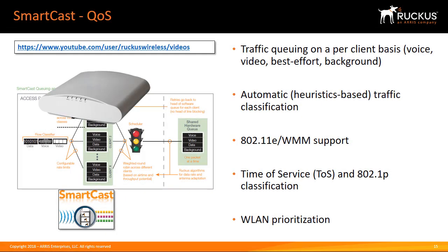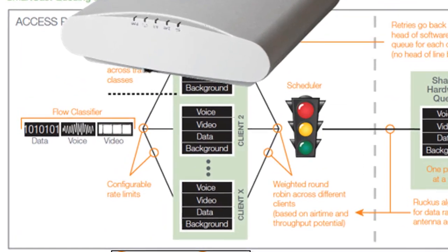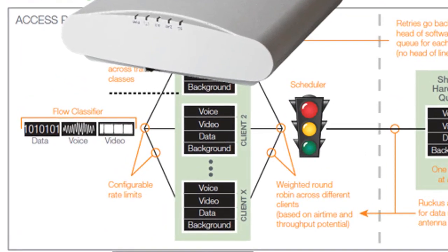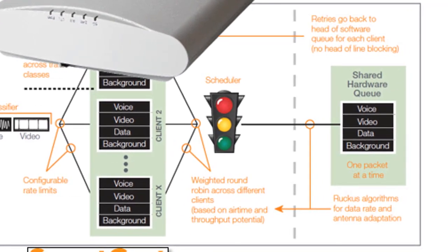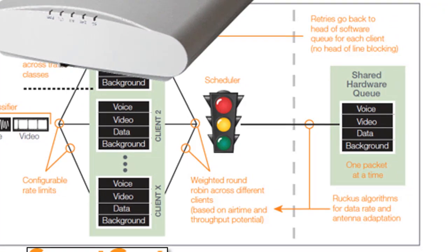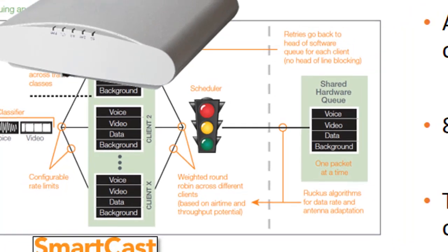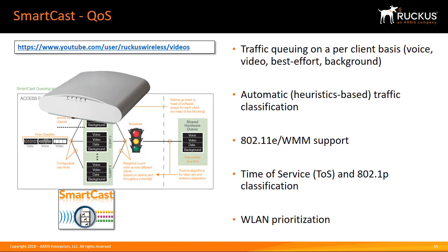SmartCast is the superset of the IEEE 802.11e WMM hardware-based queuing standard, ensuring uncompromised performance while remaining standard compliant. With per-client queuing, SmartCast is ideal for video and voice over Wi-Fi applications because it ensures disruptive clients do not negatively affect the performance of other clients. This is a built-in Quality of Service mechanism that ensures wireless LAN traffic is processed and transmitted in the most efficient manner. Its sophisticated application-aware classification engine provides per-client scheduling and prioritization for precision bandwidth management.